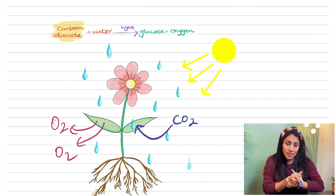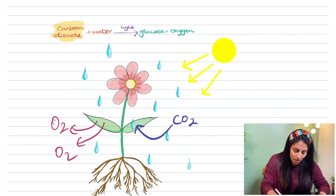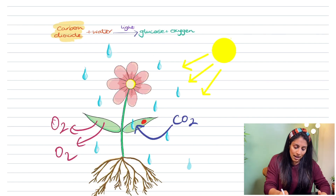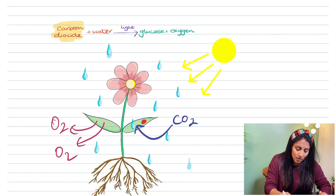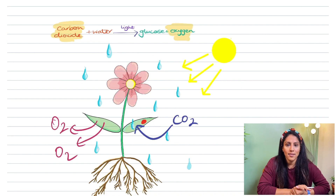When carbon dioxide and water react together because of sunlight, we get glucose being formed. You can see here that glucose has been formed in the leaf, and oxygen as a byproduct gets released. This takes us nicely into looking at the leaf.